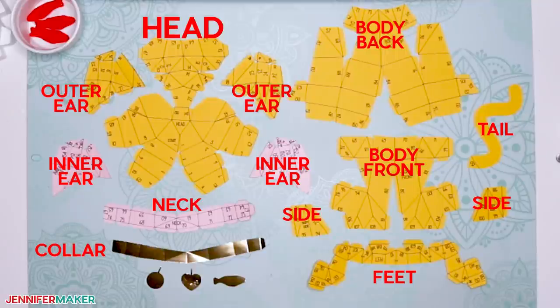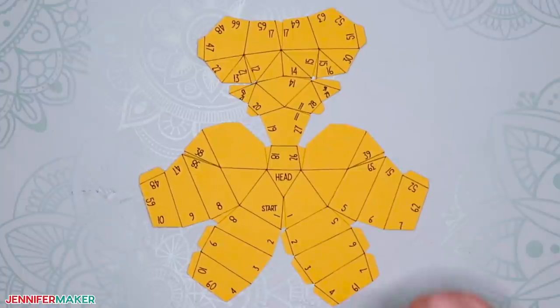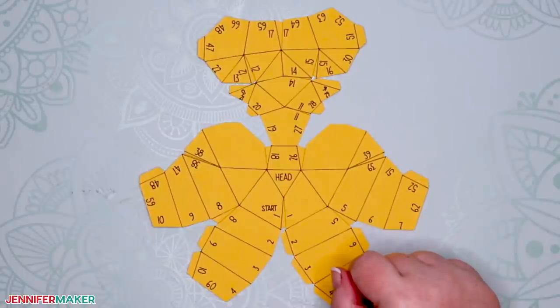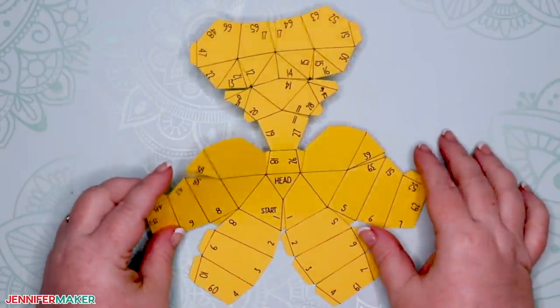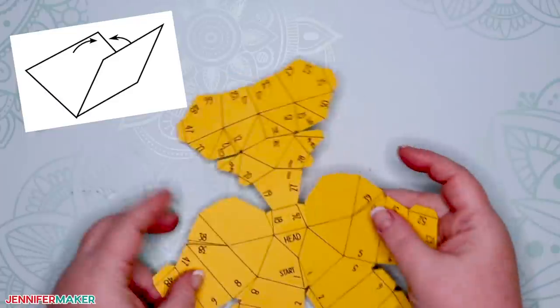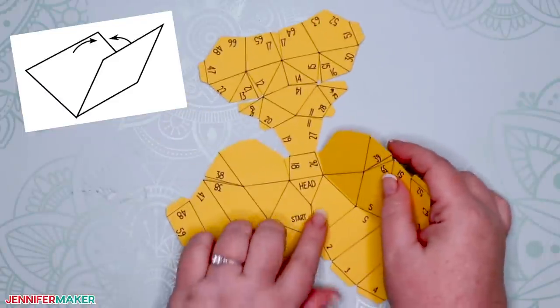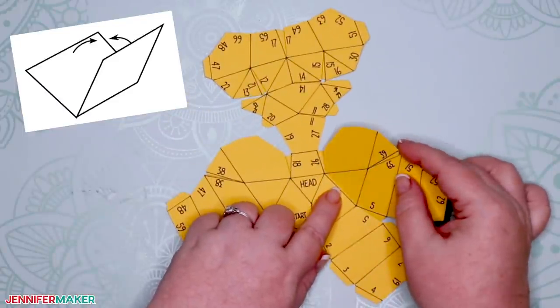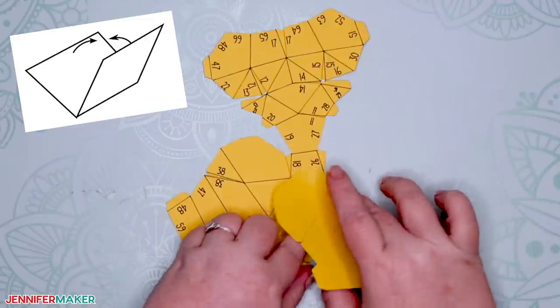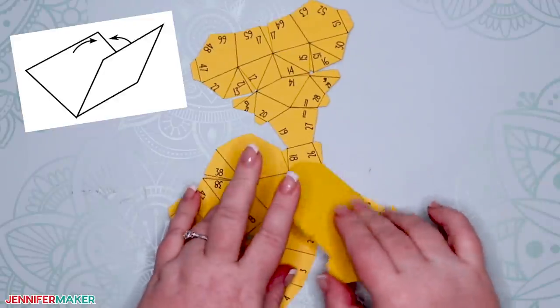The first thing you need to do is fold all the pieces on the score lines. Most folds will be fold ends, which is also known as a valley fold, as you can see me doing here. So you want your crease to be at the bottom with the paper folded forward into itself. The paper should form a V shape when you unfold it.